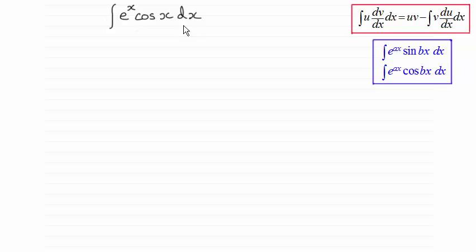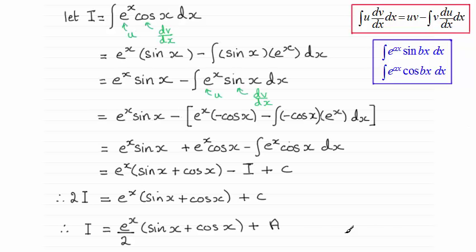Okay, welcome back then if you had a go. So let's see how you got on. You should arrive at this answer: the integral is e to the x over 2, sine x plus cosine x, and then plus a constant of integration which I've called A.